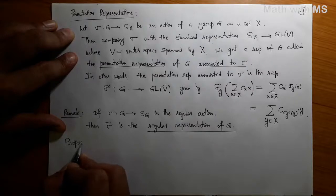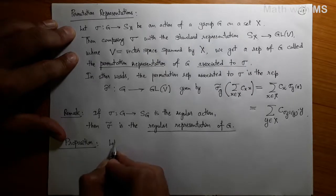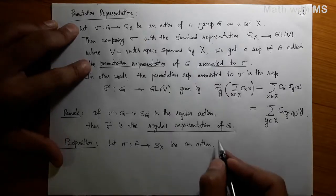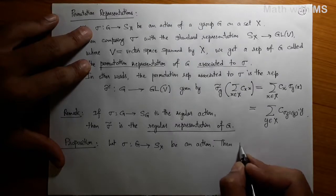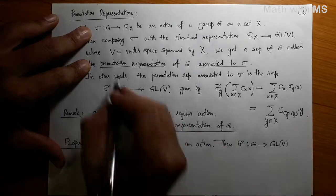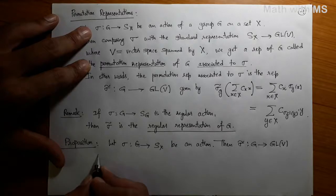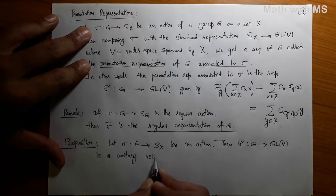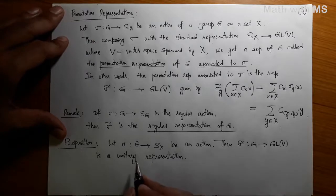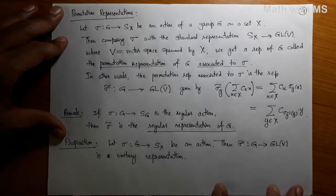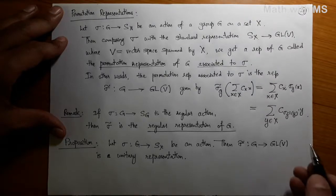Here is a proposition: Let sigma from G to SX be an action of a group G on a set X. Then the permutation representation sigma-tilde from G to GL(V), where V is the vector space spanned by X, is a unitary representation. The proof is exactly the same as what we did for the regular representation. Recall that we showed the regular representation is always unitary. The inner product given on GL(V) is just the Hermitian inner product of the coefficients.